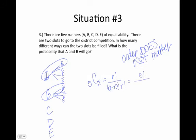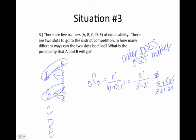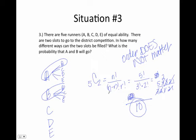That's when we use the combination formula: N factorial over (N minus R) factorial times R factorial. So we get 5 factorial over 3 factorial times 2 factorial. Be careful — there's no rule to just add or multiply these; expand them out or use your calculator. Expanding: 5 factorial over (3 times 2 times 1) times (2 times 1). The 3, 2, 1 cancels, leaving 5 times 4 over 2, which gives us 10. There are 10 different combinations. So the probability that A and B will go is 1 out of 10.